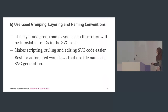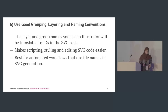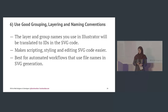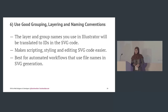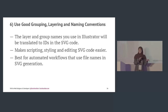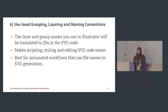Use good grouping, layering, and naming conventions. The layer and group names you use in Illustrator will be translated into IDs in the SVG code. You want something understandable, especially if you're not the one embedding it. Make scripting, styling, and editing SVG code easier. It's also best for automated workflows — spriting tools take your SVGs and generate new SVG files, so whatever naming conventions you used initially will carry through.